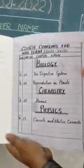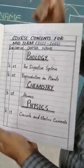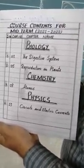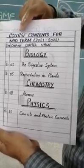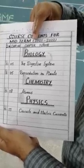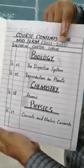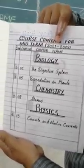This is the course of content that you will write in your copy. First, you will draw a neat block. In the block, you will write the course of content and the chapter names under biology, chemistry, and physics. At the start, you will write the course of content for midterms of 2021-2022.